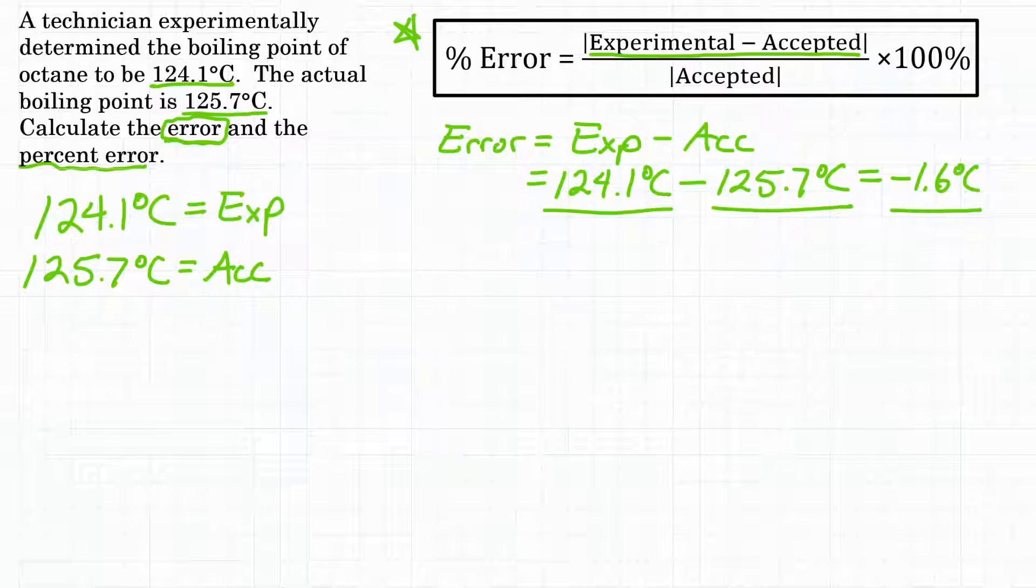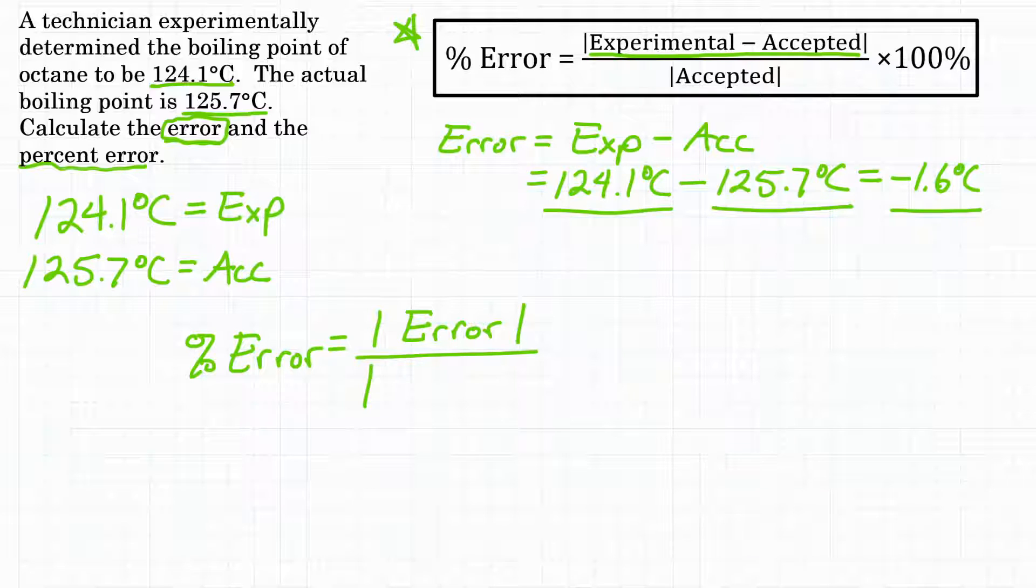So we can use that in our percent error equation. So we can rewrite our percent error equation now as the absolute value of our error, because it's just the experimental minus the accepted, over the absolute value of our accepted value times 100% to turn this into a percentage. So now we can plug in our values for this equation.